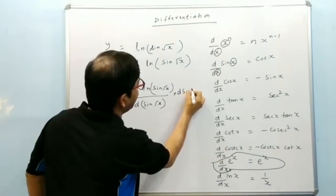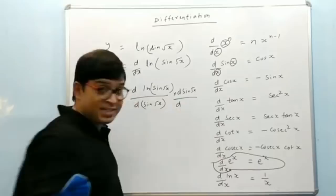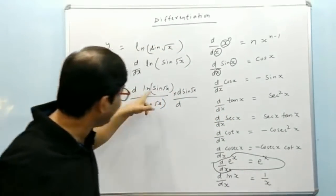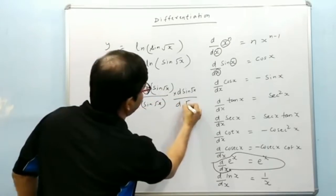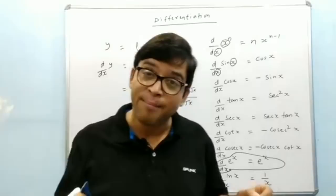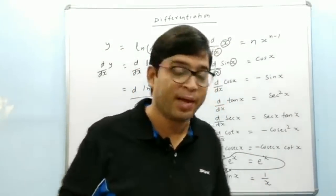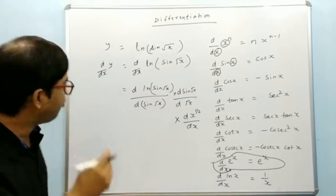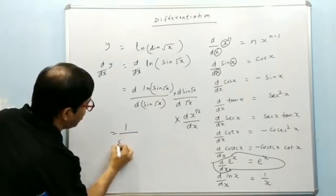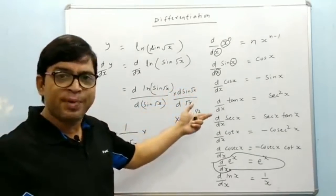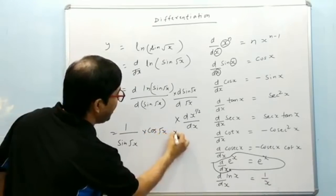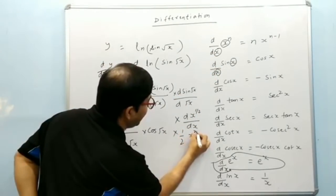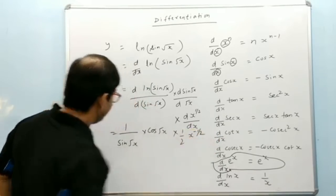So we write: d(ln(sin√x))/d(sin√x) · d(sin√x)/d(√x) · d(√x)/dx. Now what is this next part? It is sin(something), and something is √x. The result of ln(something) with respect to that thing is 1/(that thing), so 1/sin√x. Then differentiation of sin(√x) with respect to √x is cos(√x). Then d(√x)/dx = d(x^(1/2))/dx, which gives (1/2) x^(1/2 - 1) = (1/2) x^(-1/2). So this is the complete differentiation.